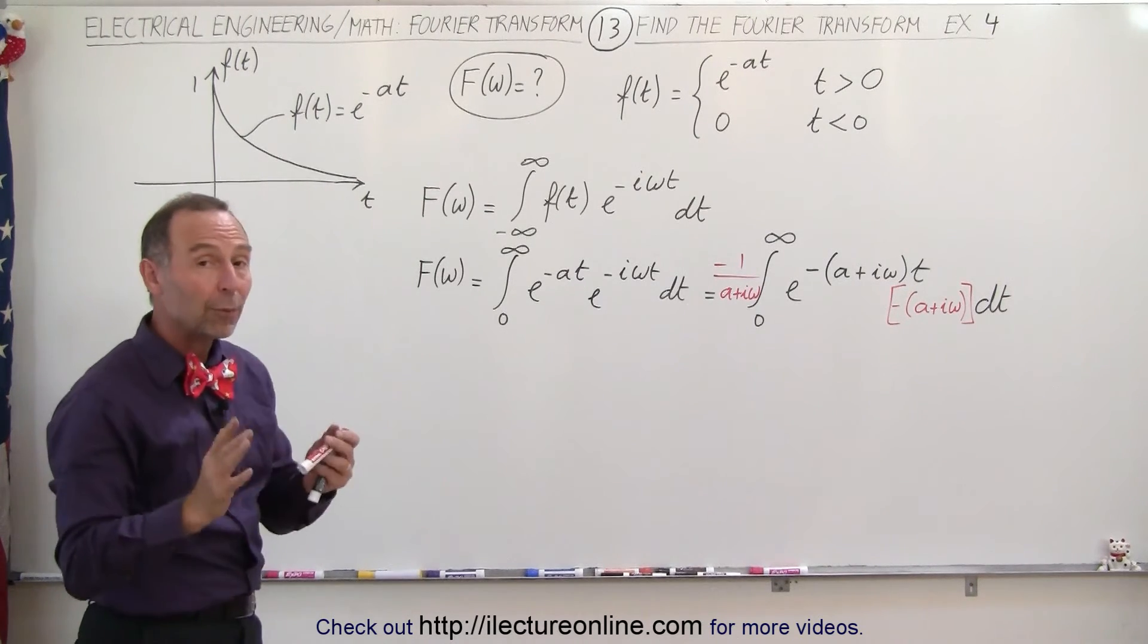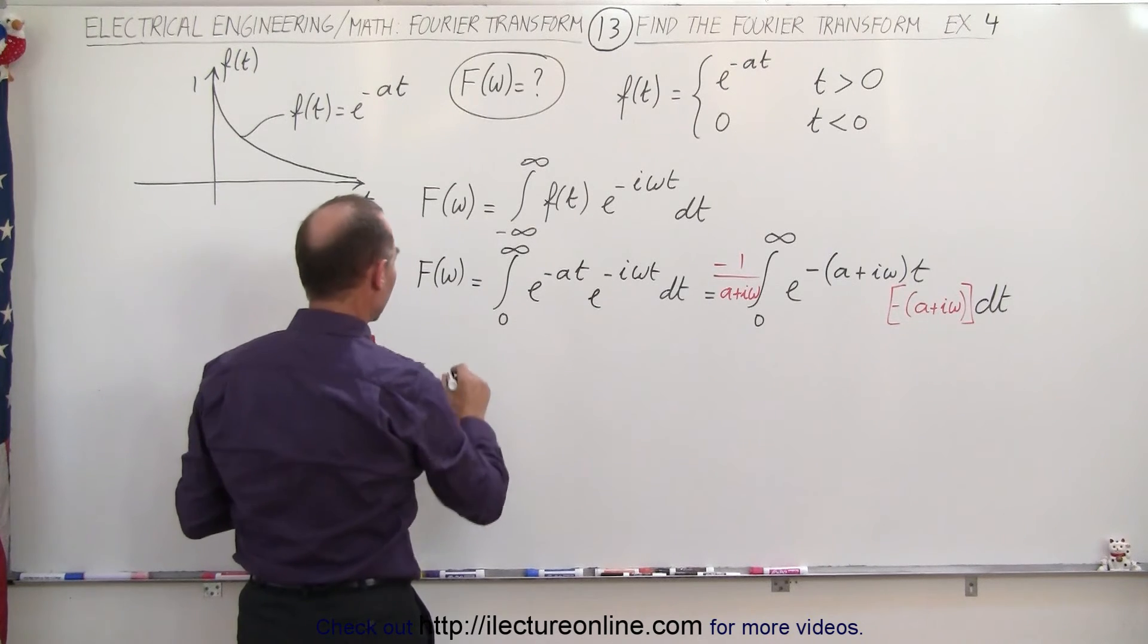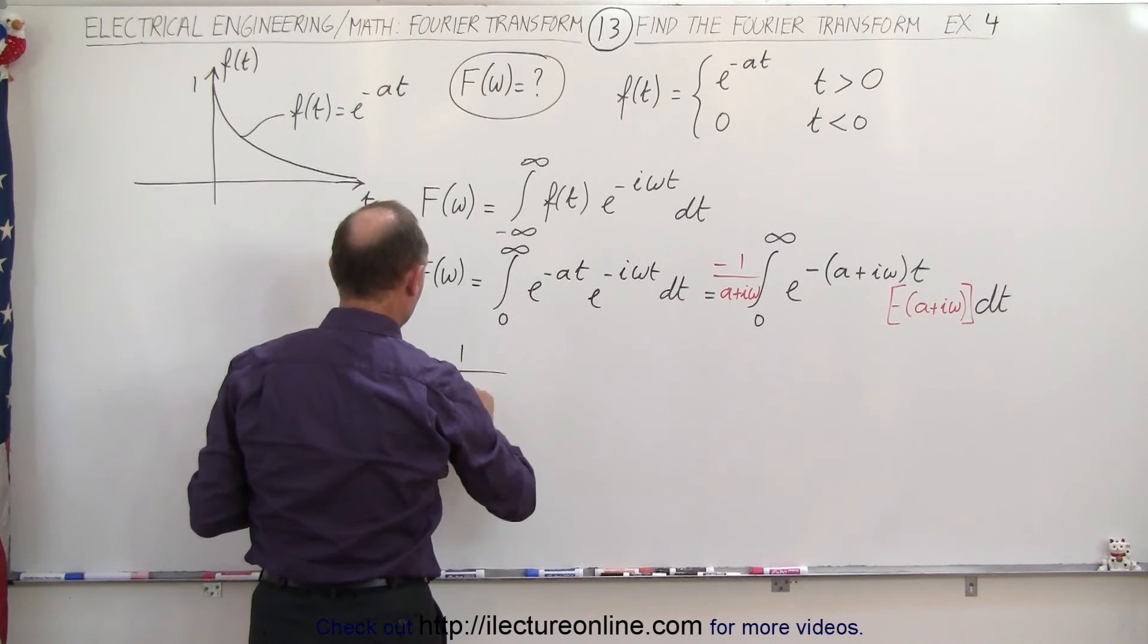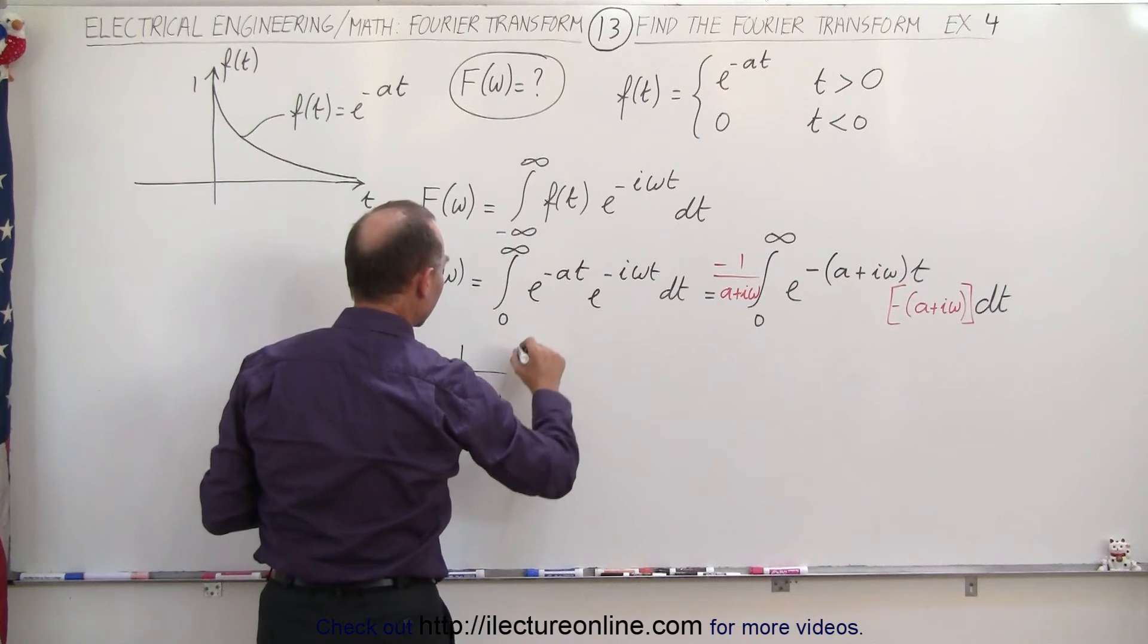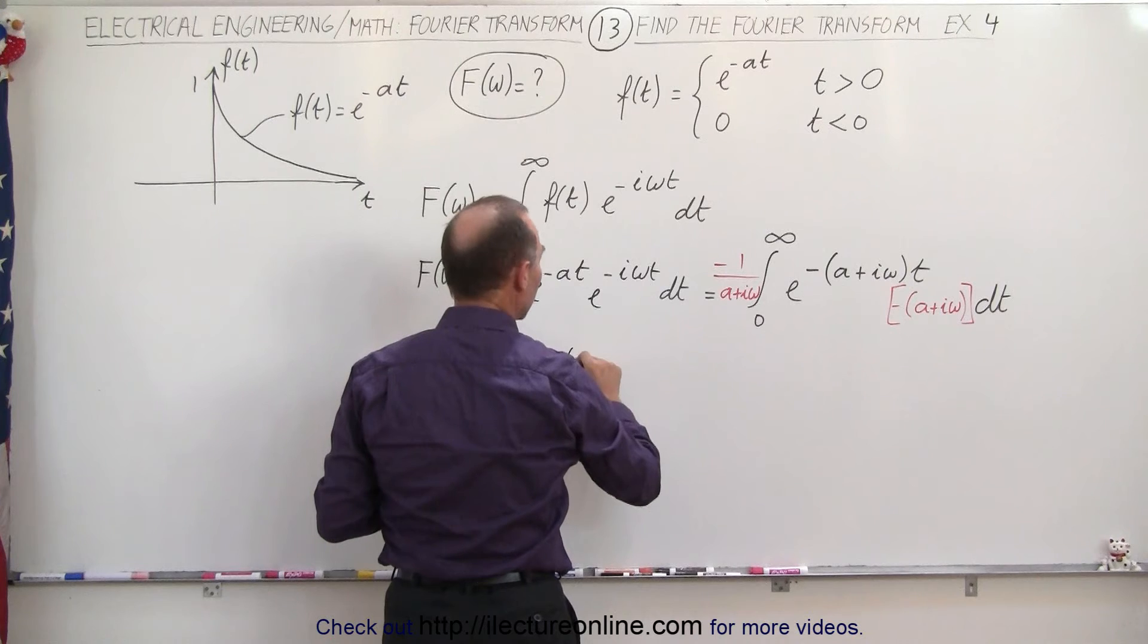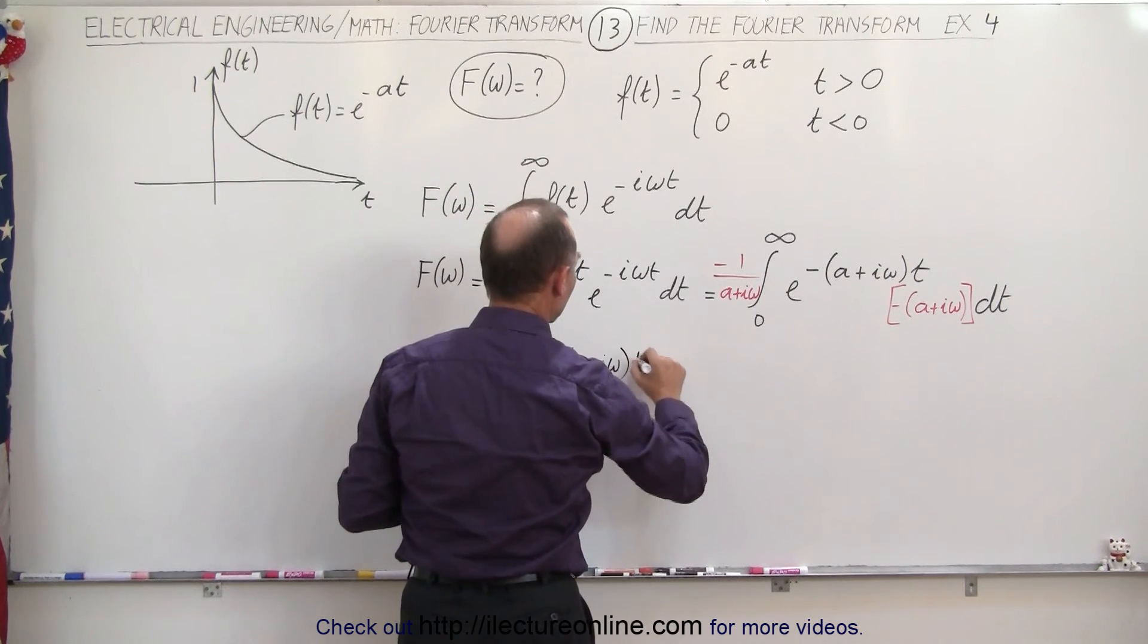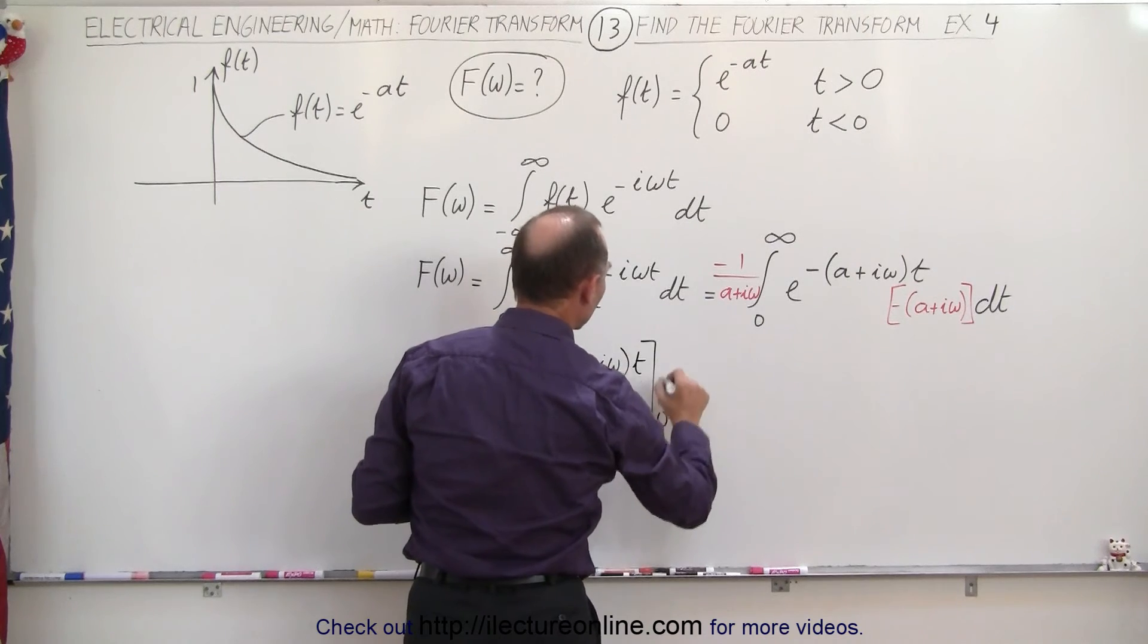Okay, that looks good, so now we're ready to integrate. So the Fourier transform is equal to minus 1 over a plus i omega times - now we can integrate this - so we have e to the minus quantity a plus i omega times t evaluated from 0 to infinity.